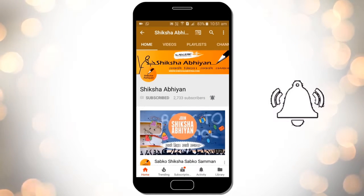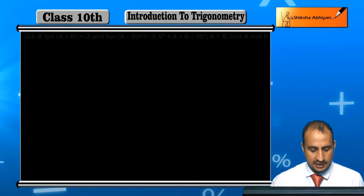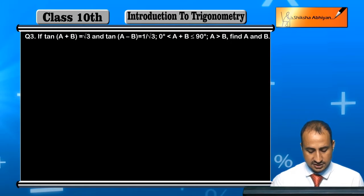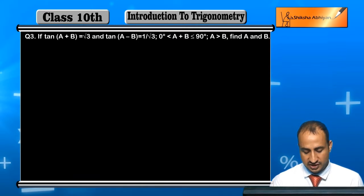Now students, see question 3: If tan(A + B) = √3 and tan(A - B) = 1/√3, and A + B is greater than 0° and less than or equal to 90°...